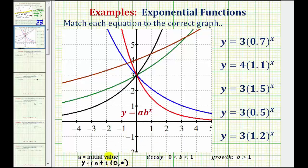Now the reason it's called the initial value is that often we use the variable t instead of x to represent time, and when t is equal to zero, that would be the starting amount, or initial value, before the exponential growth or decay starts.